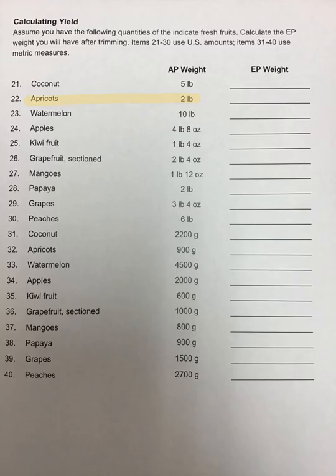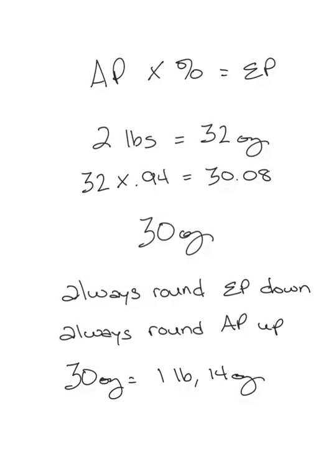Our AP weight of apricots is 2 pounds, and we'll use that information to calculate our EP weight. The formula is AP times the percentage equals EP. Our as-purchased weight is 2 pounds — we're going to convert that to our lowest common unit, ounces. So 2 pounds is equal to 32 ounces. 32 times 0.94 is equal to 30.08 ounces, or 30 ounces.